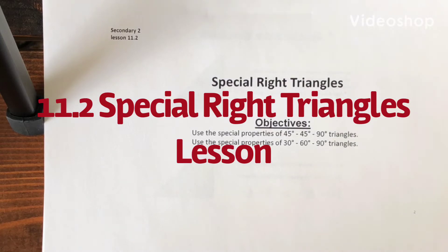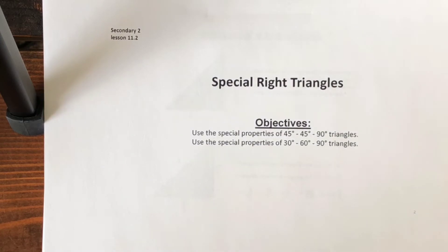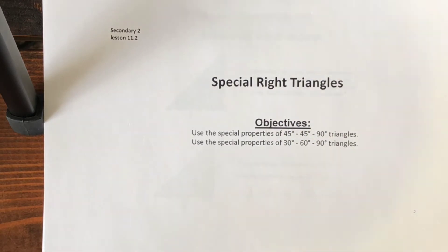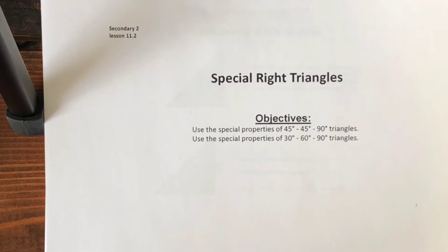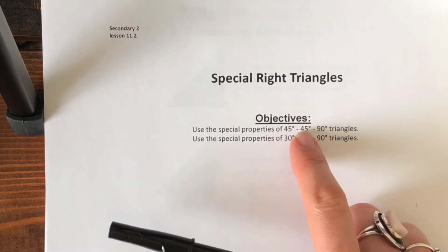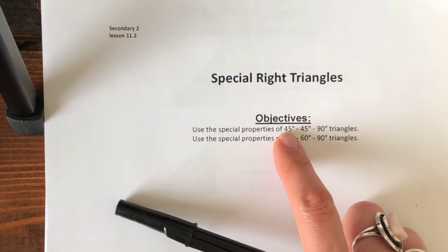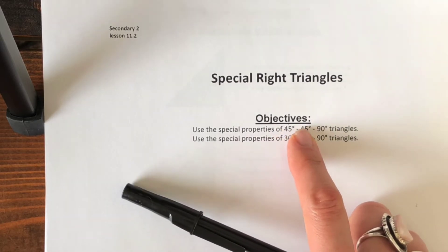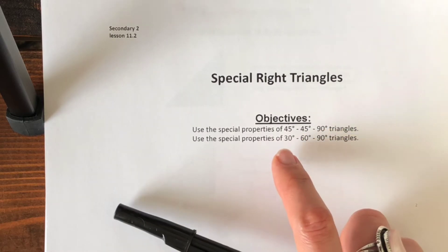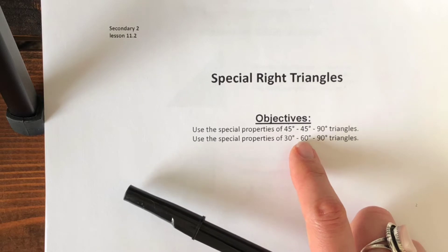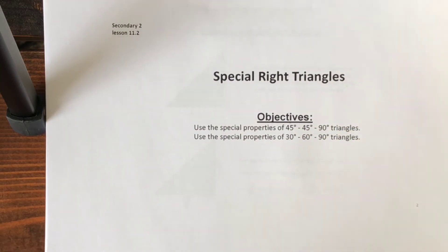Hey guys, today for section 11.2 we are going to learn about something called special right triangles. These are kind of like a type of shortcut that you can use in certain types of triangles that have certain angles. We are going to look at 45-45-90 triangles — those are the angle degrees — and we're also going to look at 30-60-90, which are also going to be the angle sizes.